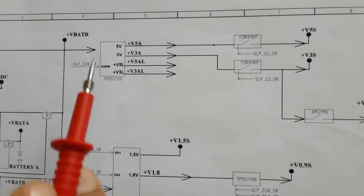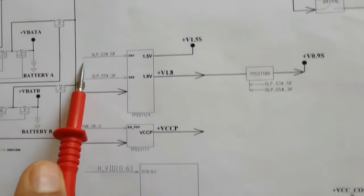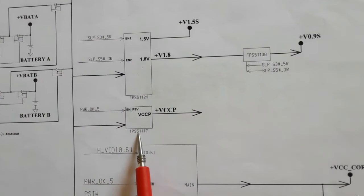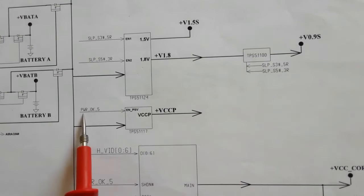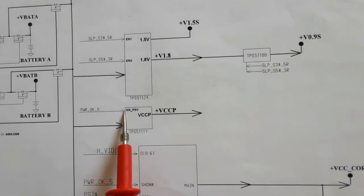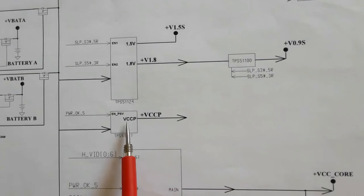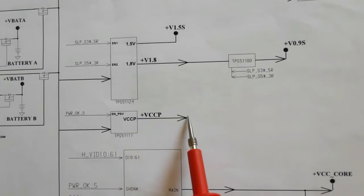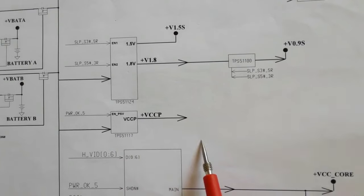VBAT is also applied to the TPS51117, which is the plus VCCP power management IC. With an enable signal, the IC generates plus VCCP for all chips, including the processor.